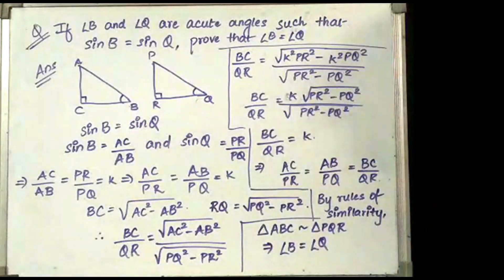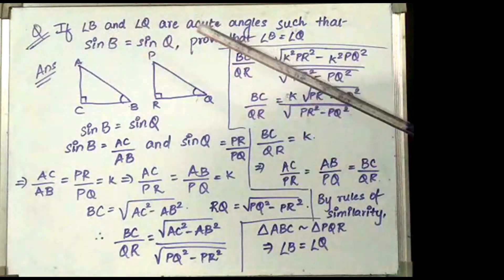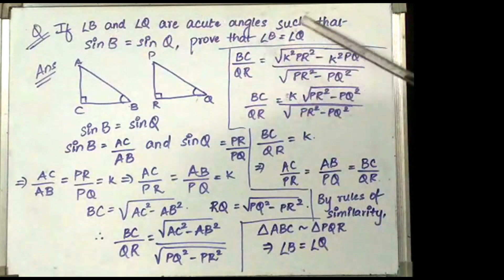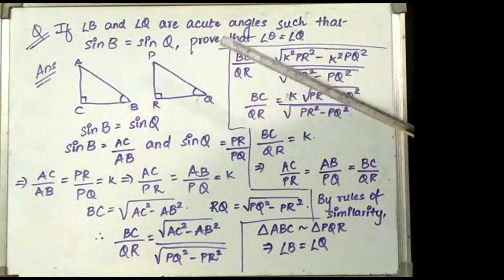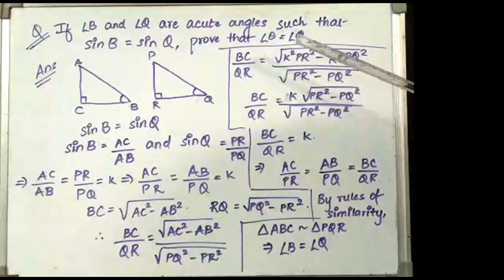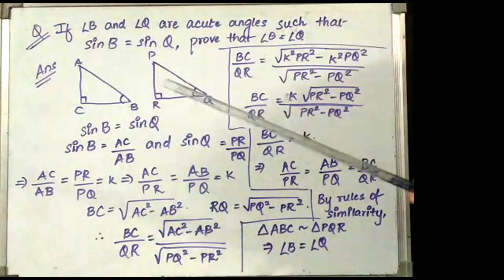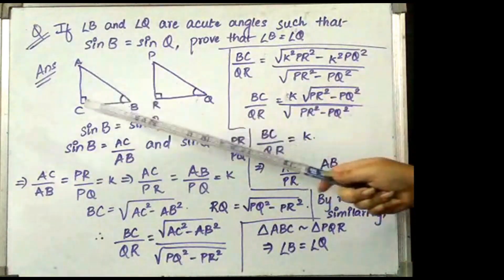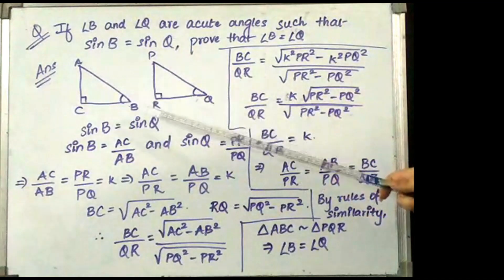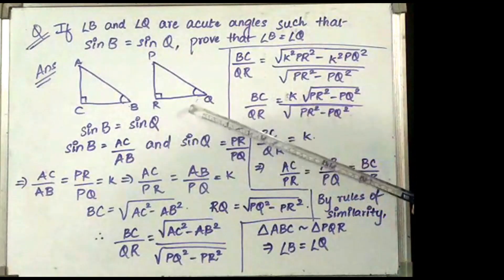The next question is: if angle B and angle Q are acute angles such that sin B is equal to sin Q, prove that angle B is equal to angle Q. We first construct angle ABC and angle PQR such that both of them are right triangles.